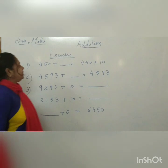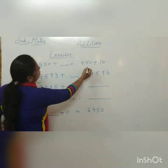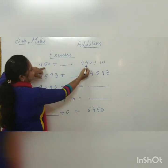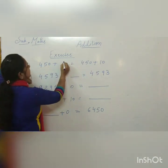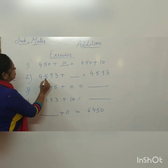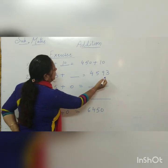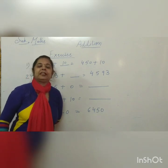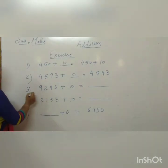Now we will do an activity. Question 1: 450 plus dash equals 450 plus 10. Here both 450s are the same, so the missing number is 10. Question 2: 4,593 plus dash equals 4,593. When 0 is added to any number the number remains the same, so we write 0. Question 3: 9,295 plus 0 equals dash. The number remains the same, so the answer is 9,295.